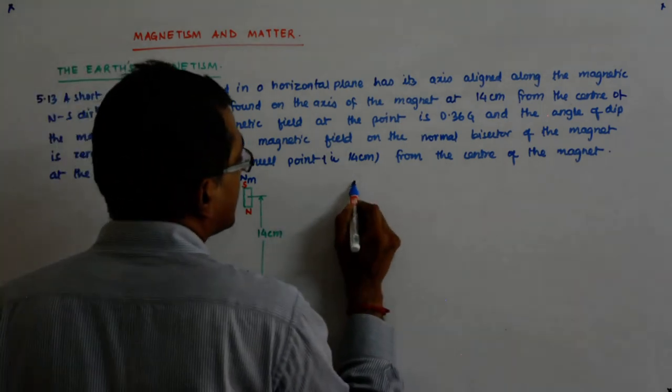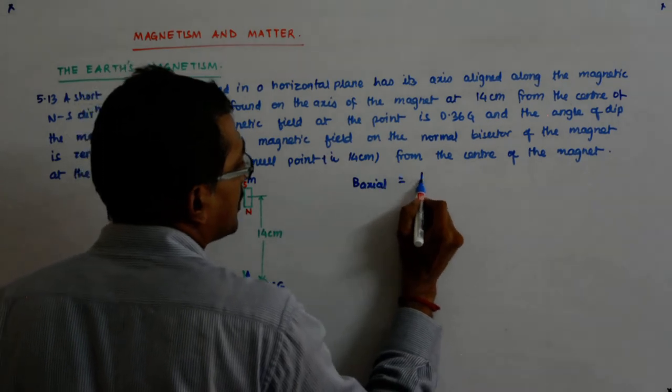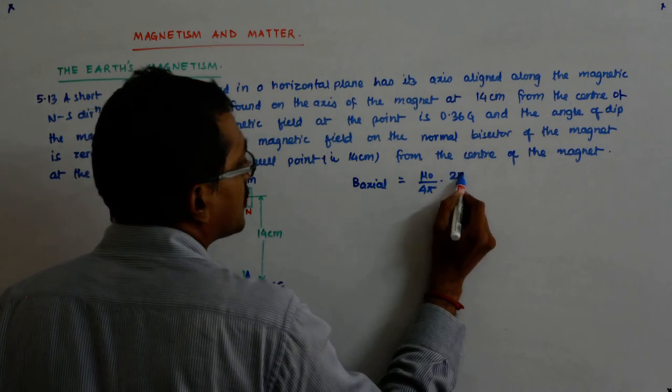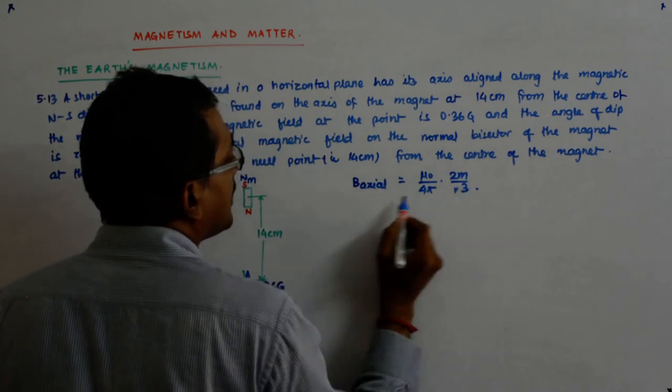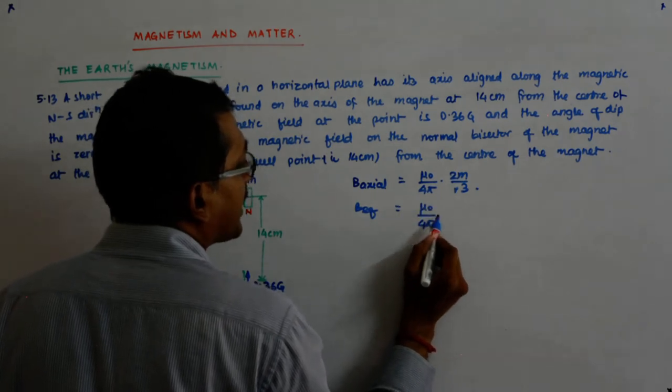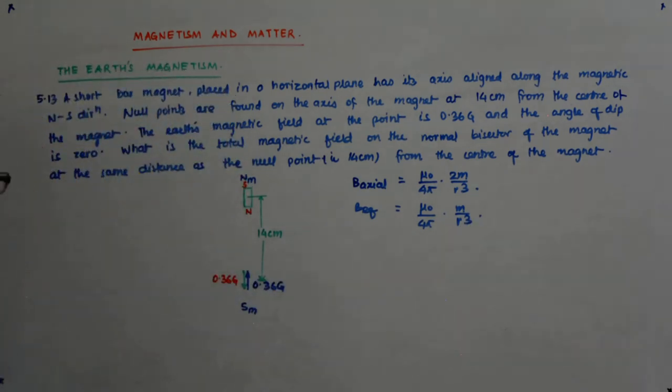Now let us write the formula. B axial, I am writing the magnitude, is μ₀ upon 4π into 2M by R cube. And the directions are opposite.